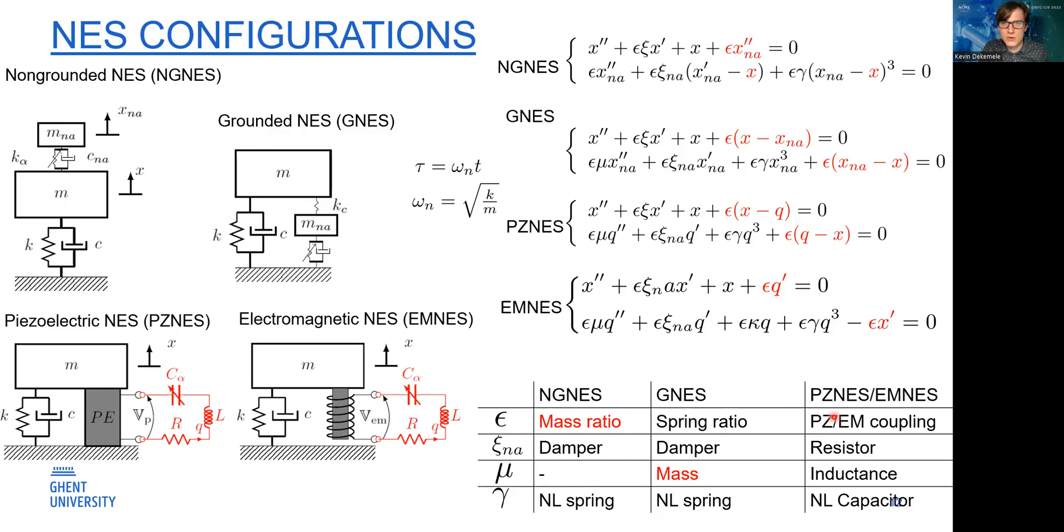For the non-grounded NES, this epsilon, which should be small, is a mass ratio. But for the grounded NES, it's a spring ratio. For the electromagnetic smart ones, it's electromagnetic coupling. The mu for the grounded NES is mass, so it has a different meaning. Mass for the grounded versus the non-grounded. Mass in the electrical sense is inductance, and if you have a nonlinear spring, well, we have a capacitor.